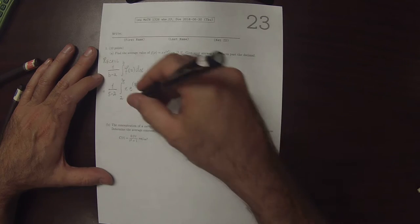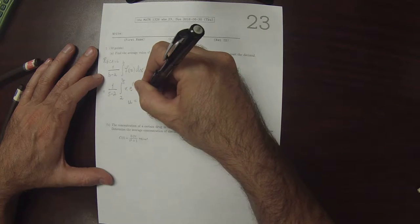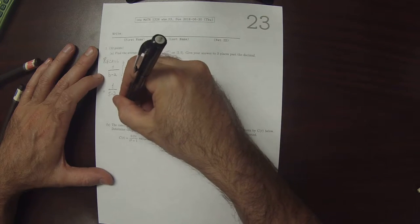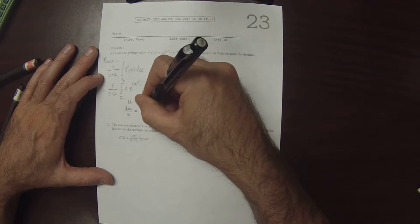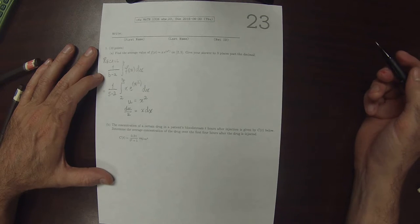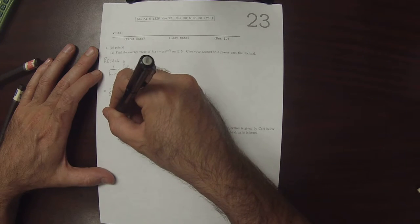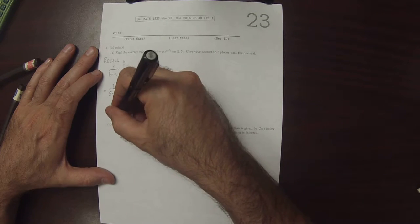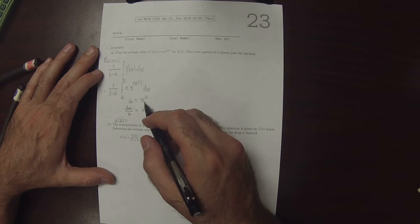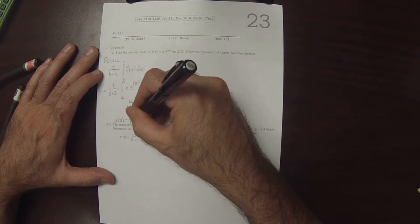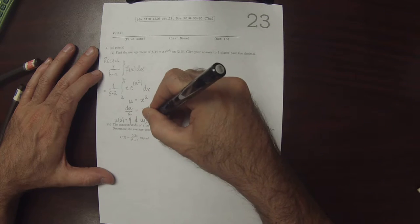In order to carry this out, we'll need a substitution. So if u is x squared, then du divided by 2 is x dx. And we'll go ahead and change the limits. So when u is evaluated at 2, that's 4, and when u is evaluated at 5, that's 25.